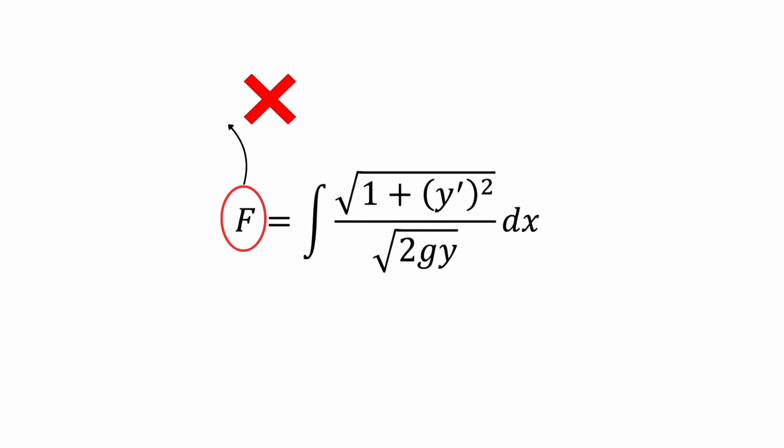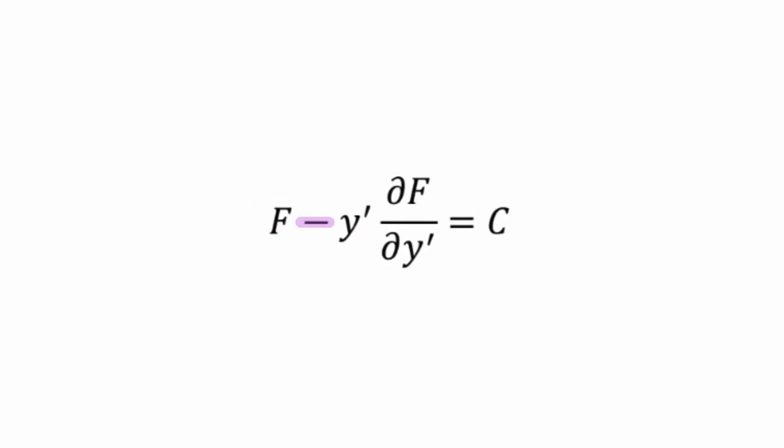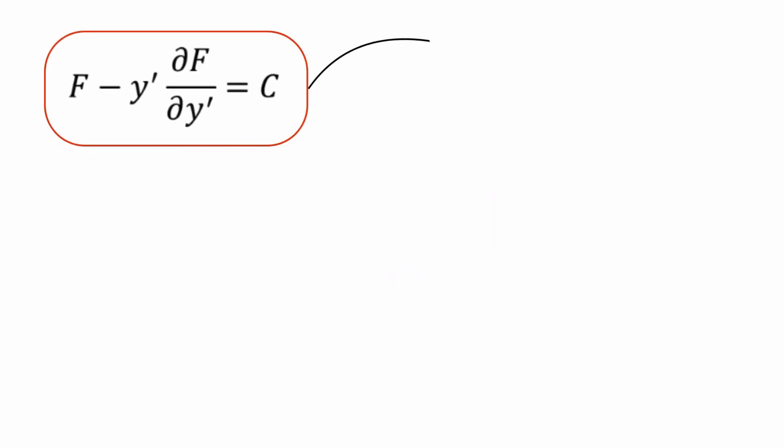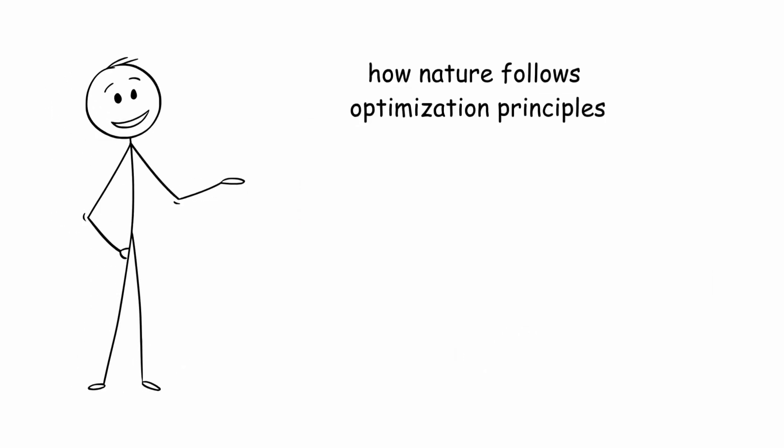Since f does not depend on x explicitly, there is a property in variational calculus that allows the problem to be simplified: f - y'(∂f/∂y') = c. Solving this differential equation reveals that the curve that minimizes the descent time is not a straight line or a parabola, but a cycloid. This result is surprising and demonstrates how nature follows optimization principles that can be described using advanced mathematics.